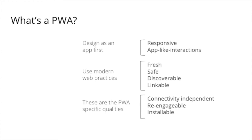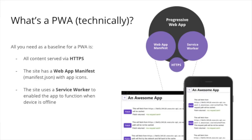Those are nine things that sound very good, but when you look at what makes a PWA technically — which is probably what we're more interested in — there are three main aspects. These are what you need to transition from a web app to a progressive web app. The first is that you need to serve all content via HTTPS, which in 2021 is a no-brainer and should be done by default anyway.